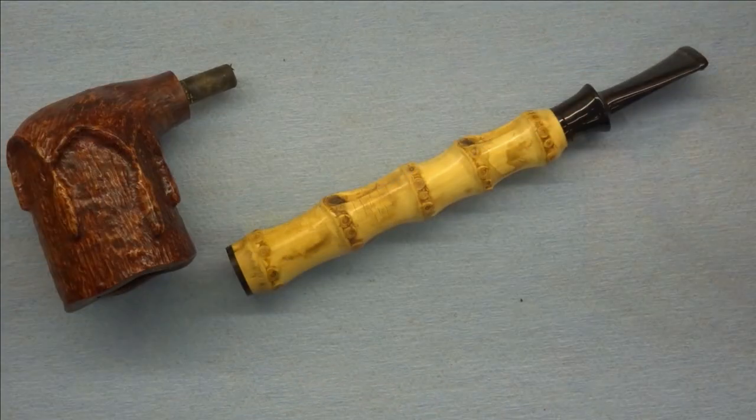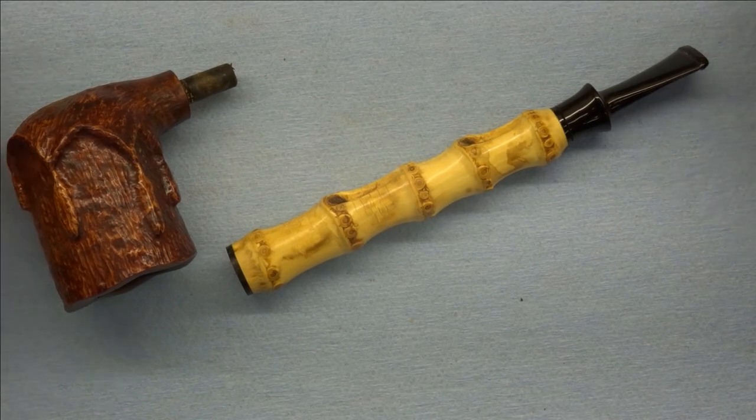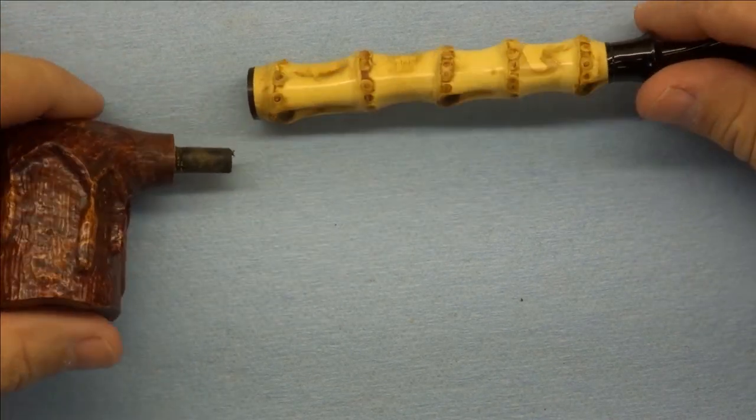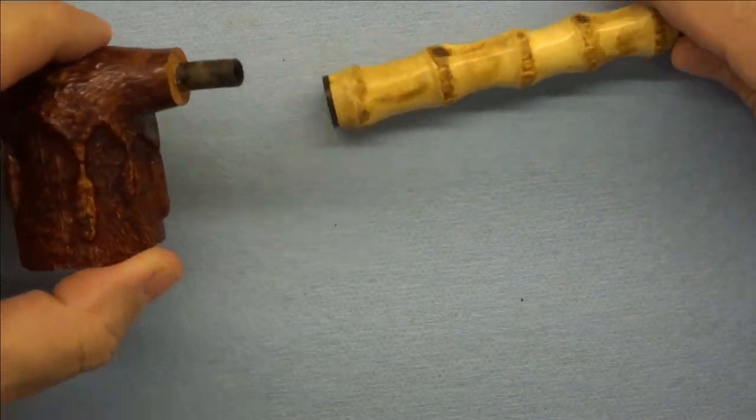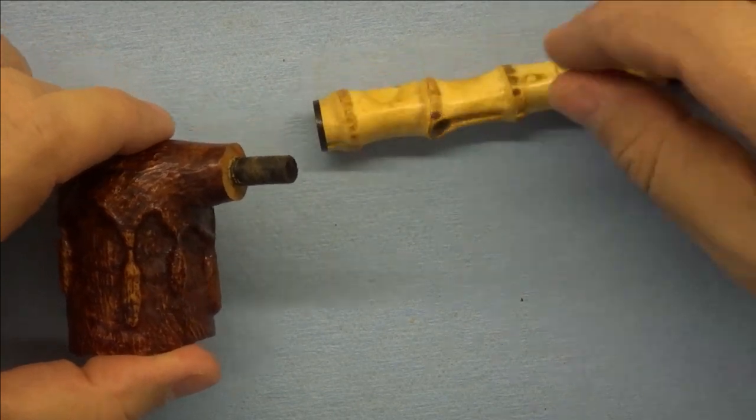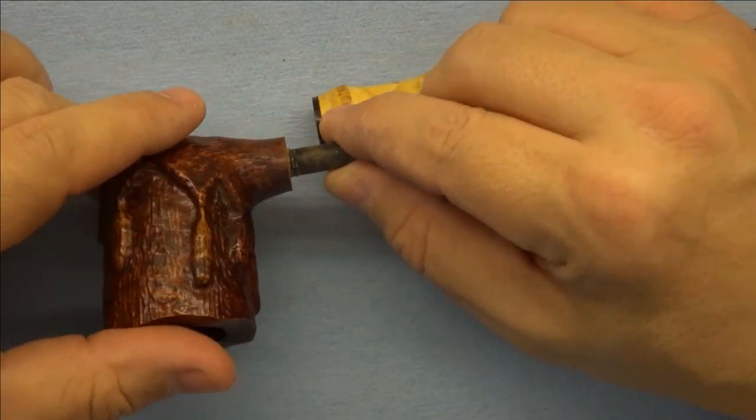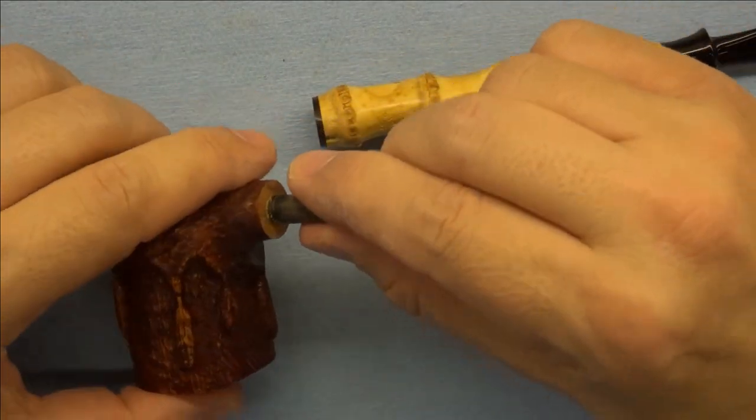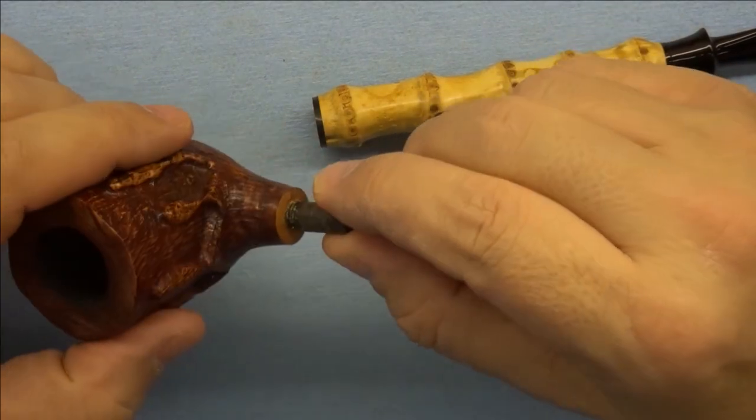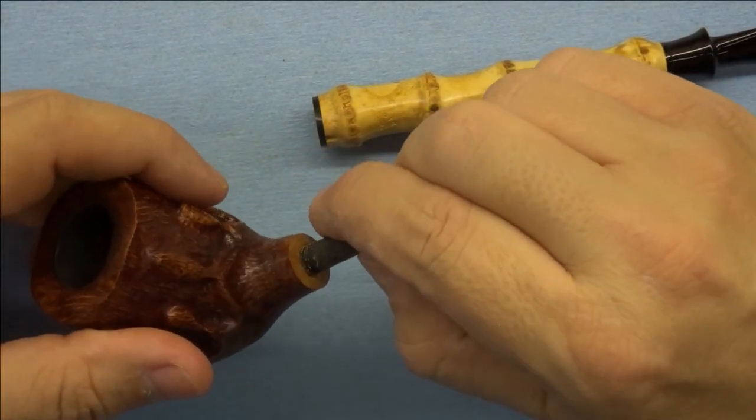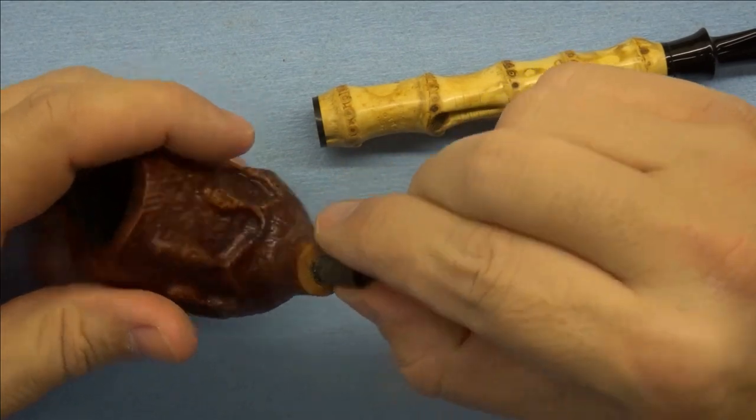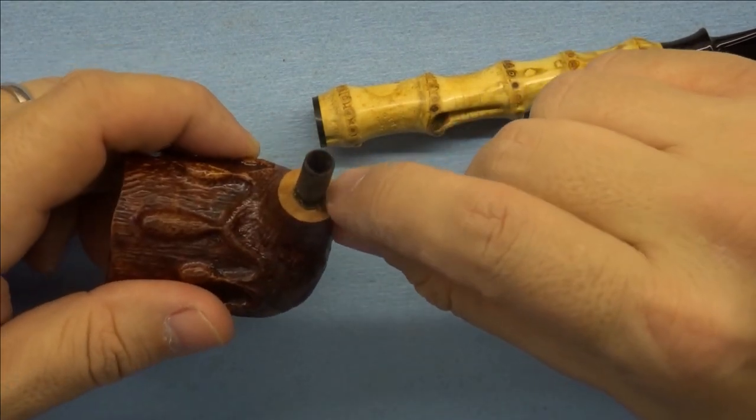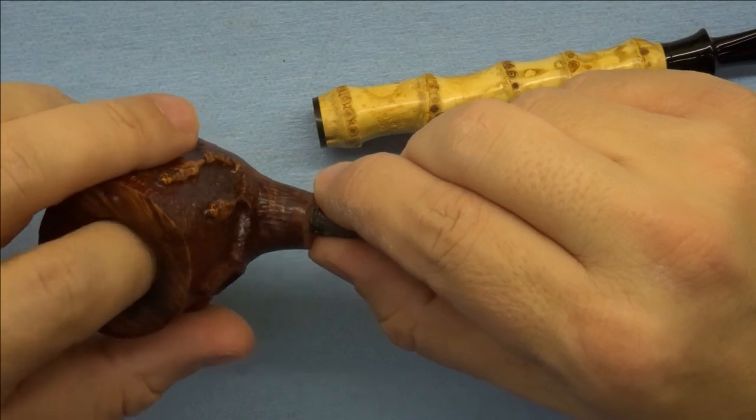Well that was fairly easy, a little bit of heat and it loosened right up. And as you can see I'm a bit surprised by what we've got here. This is not a piece of stainless steel tubing at all, I think it's vulcanite but I could be wrong about that. It might be some other material but I do think it's made of ebonite and it's just basically a tube.